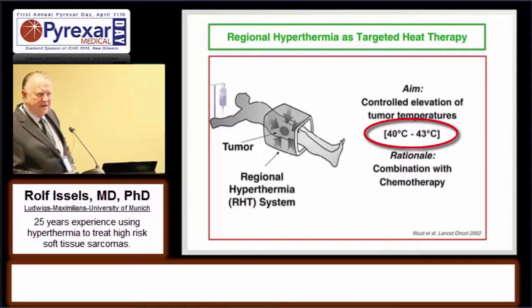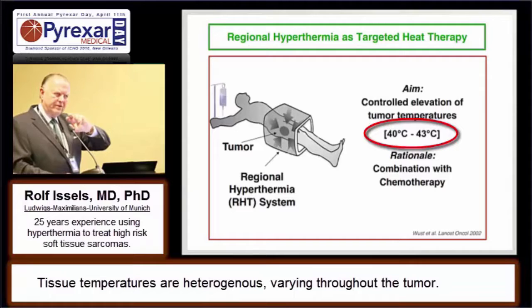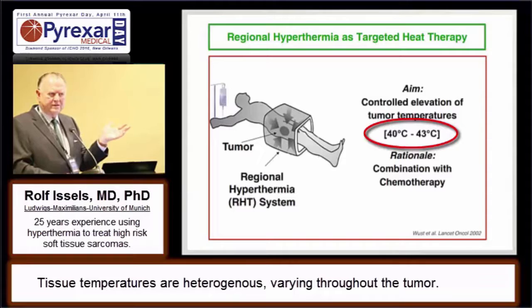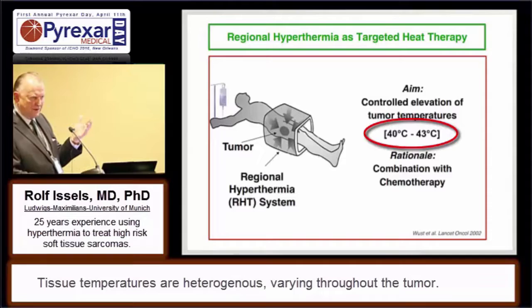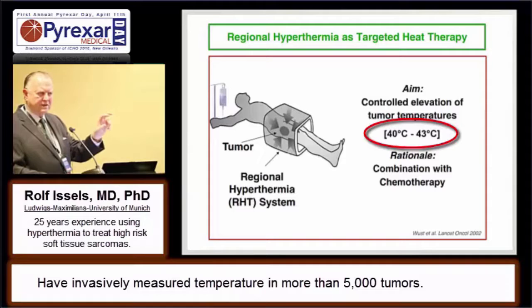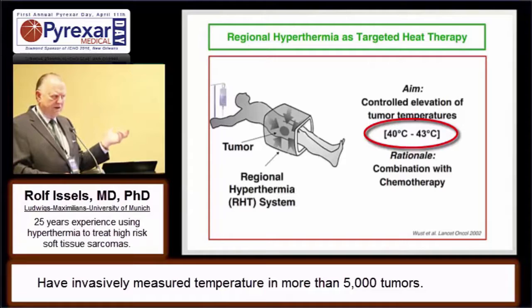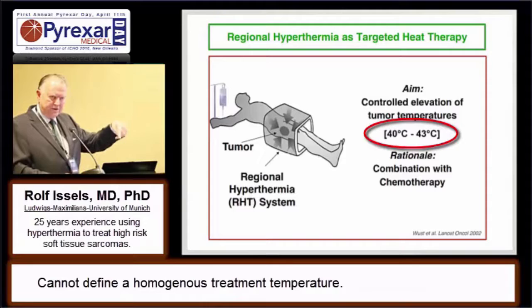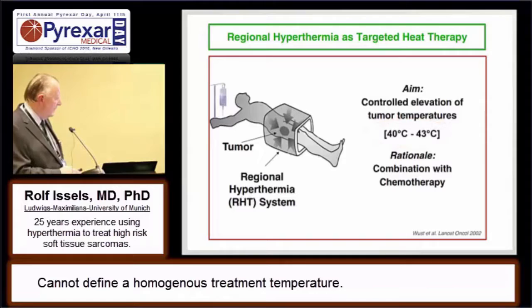I want to make this remark about the 40 to 43 degree range. We can never have a homogeneous temperature profile in the tumor. We always have areas with 43 degrees and more, which are the necrotic areas in the tumor. And then other areas of the tumor which are low, like 37 degrees. We have measured more than 5,000 tumors in the sarcoma setting with invasive thermometry, and we always have the same heterogeneous temperature profile. This is fundamental information: if you use this kind of technology, you always have this range between 40 to 43, and we cannot define a homogeneous elevation of temperature.